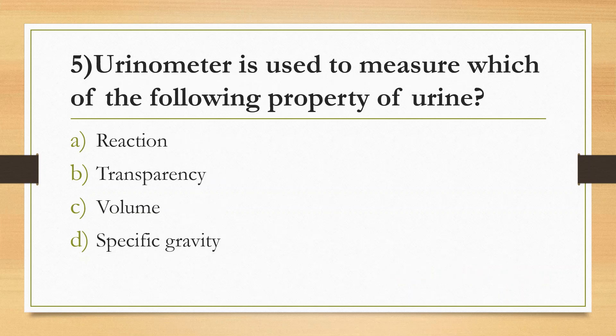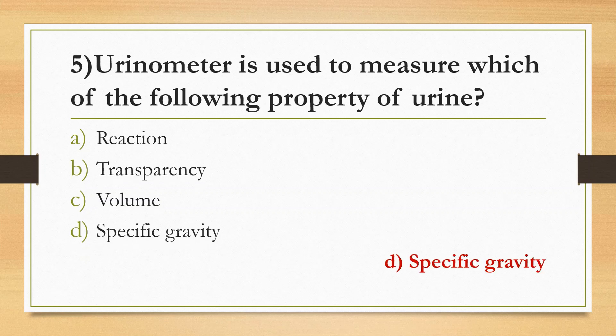Fifth Question: A urinometer is used to measure which property of urine — Option A: Reaction, Option B: Transparency, Option C: Volume, Option D: Specific gravity. Answer is Option D: Specific gravity. The normal specific gravity of urine is 1.005 to 1.030. Other methods to measure urine specific gravity include refractometer, reagent strip, and hydrometry.